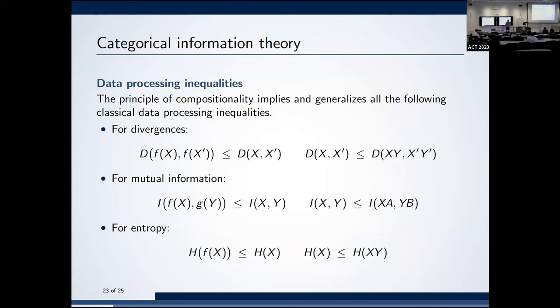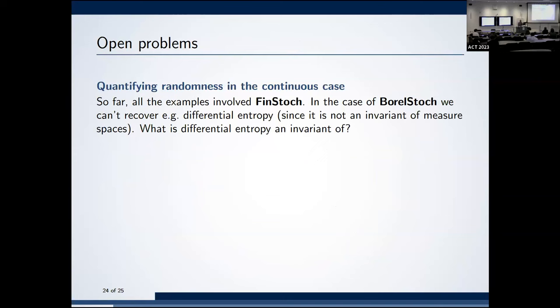The compositionality principle is a massive generalization of all data-processing inequalities. It implies monotonicity conditions on the number of observed variables for divergence, mutual information, and entropy, all of which follow simply from that one axiom — for f and g deterministic. All these inequalities are aspects of this enriched categorical framework.